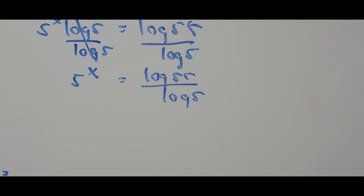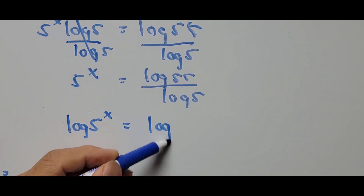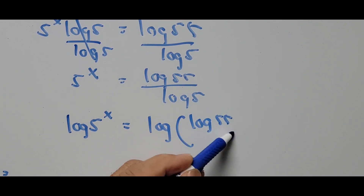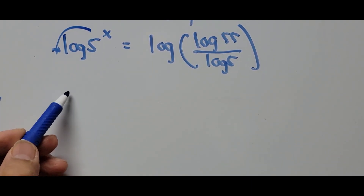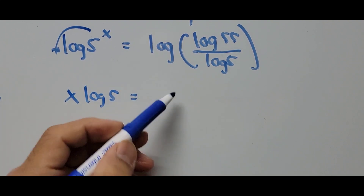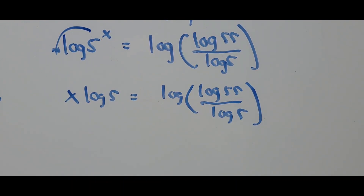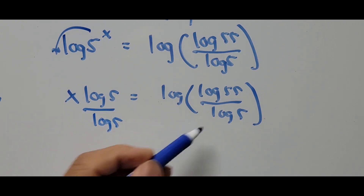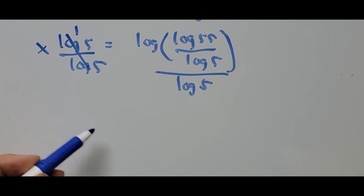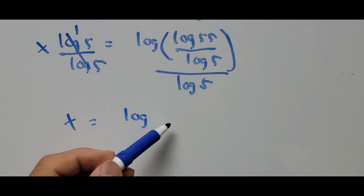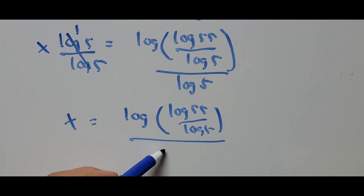From here, we take the log of both sides one more time: log of 5^x equals log of (log 55 divided by log 5). Bringing down the exponent as a coefficient gives x times log 5 equals log of (log 55 divided by log 5). Dividing both sides by log 5, we arrive at x equals log of (log 55 divided by log 5), all over log 5 — the same answer as Method 1.